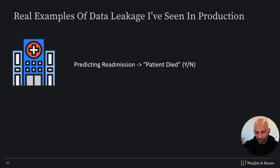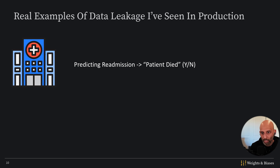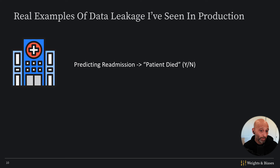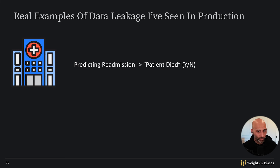If you don't understand how the model is used in the business process, you might not realize you have data leakage — that there's a feature containing information you don't normally have at the time the model will be used. This field is always going to be null, blank, or unavailable at inference time. And so you will get a very optimistic estimate of your performance. These things can be hard to catch, and the names of these fields may not be so blatantly labeled.